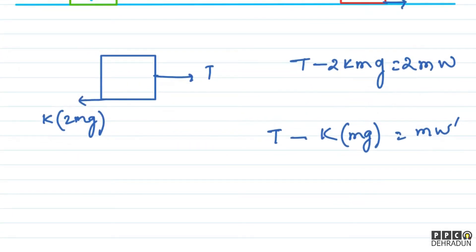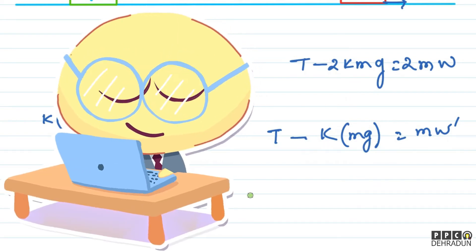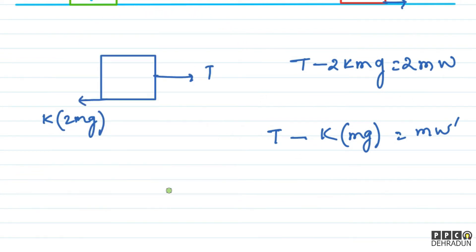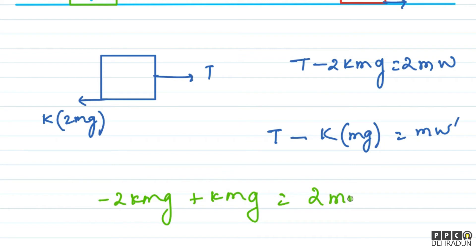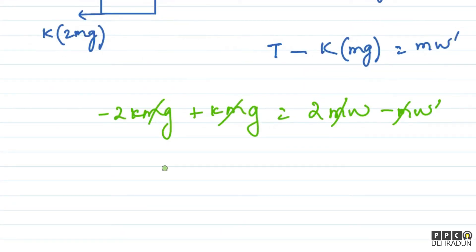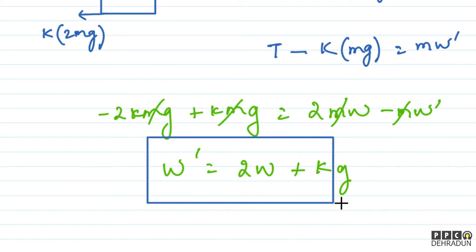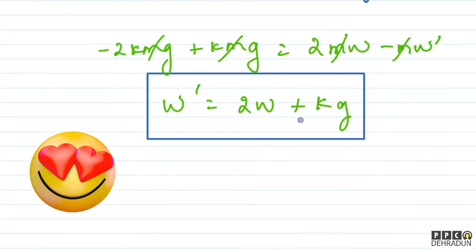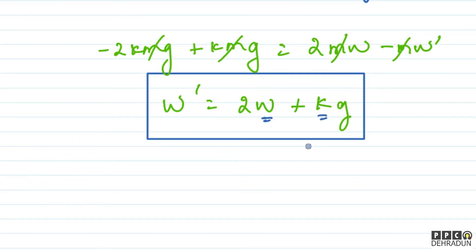So we now have two equations. Let's try to solve them. We will subtract the two equations so that tension cancels out. Subtracting gives us: minus 2kMg minus (minus kMg) equals 2Mw minus MW'. Dividing through by M and rearranging, W' comes out to be 2W plus kg. So the acceleration of the motor block is W' = 2W + kg, which is also constant since W is constant and k is the constant coefficient of friction.